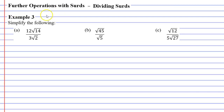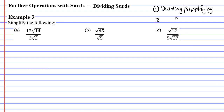In this video we're going to complete example three and learn how to divide surds. There are two methods we can use. The first method involves dividing or simplifying, and the second method involves cancelling.